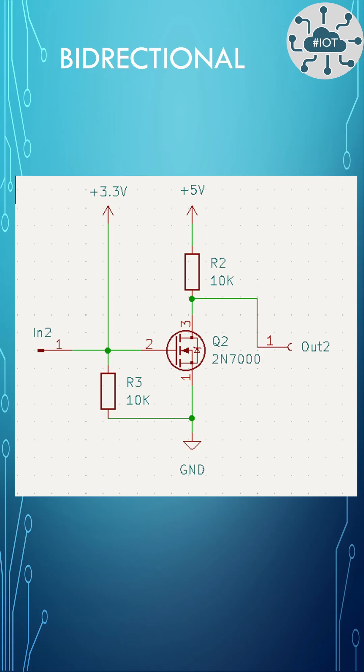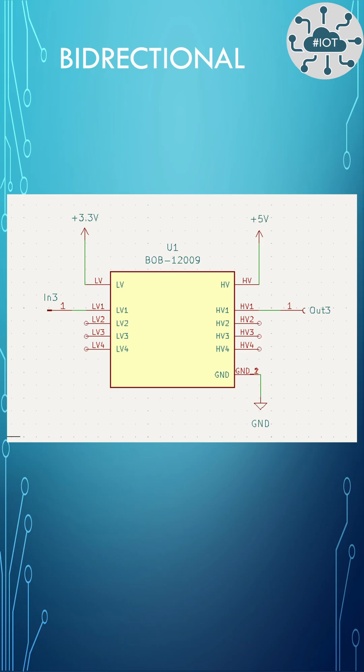Sometimes we need to do this in both directions so the line can be both an input and an output. This puts us back to using our MOSFET circuit or a dedicated module board, which can be a simpler approach.